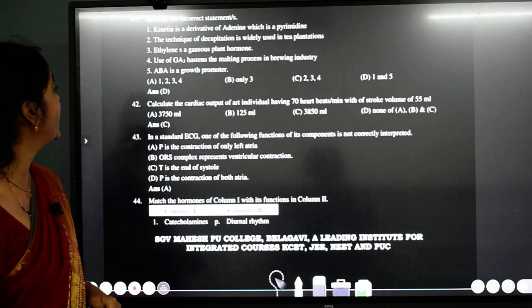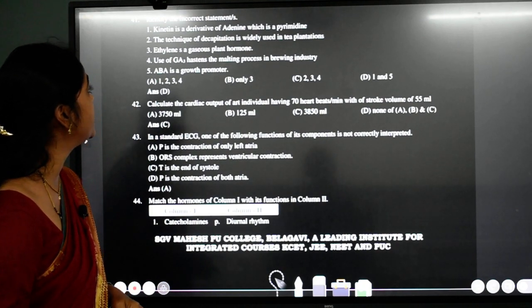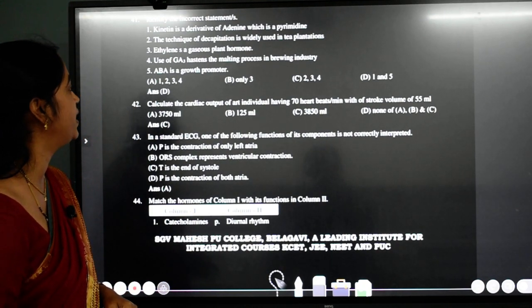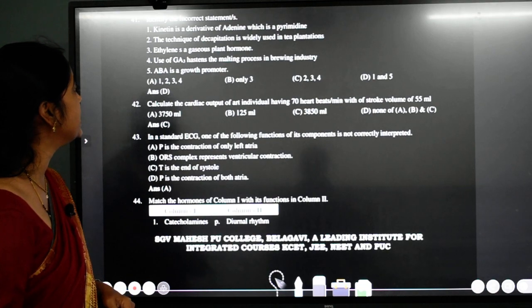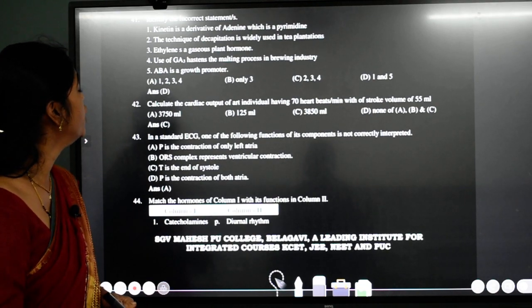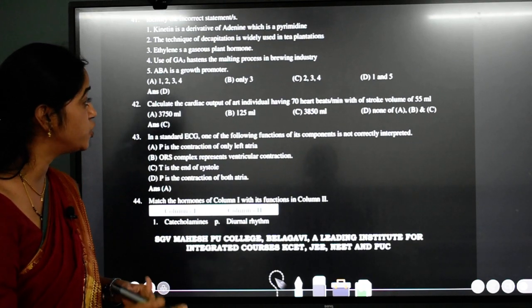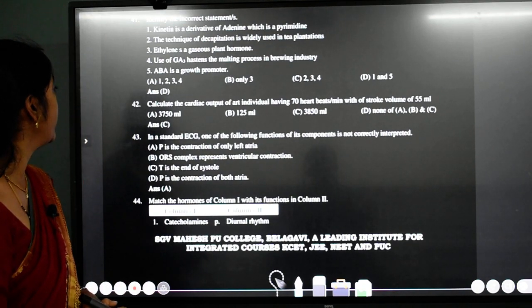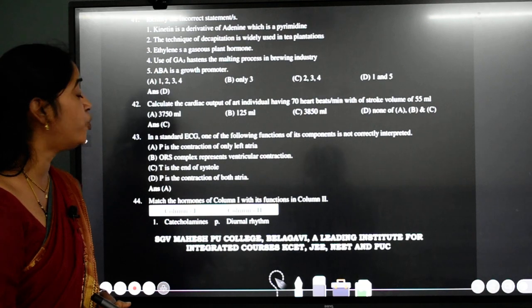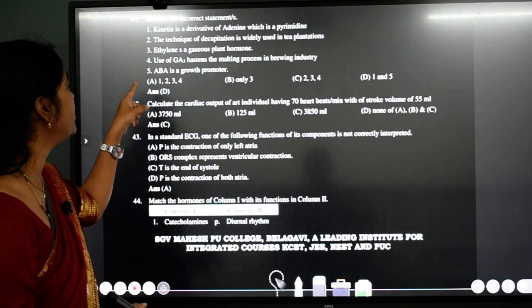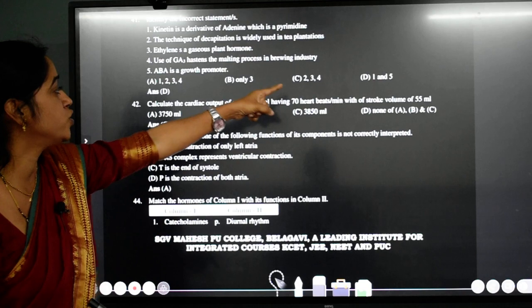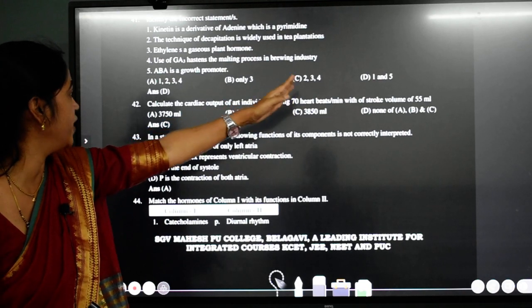Second one, the technique of decapitation is widely used in the tea plantation. Correct. Ethylene is a gaseous plant hormone. Correct. Use of GA3 hastens the malting process in brewing industry. That is also correct. Fifth one, ABA is a growth promoter. No, it is not a growth promoter. So if you see in five statements, 1 and 5 are wrong. So the answer is D, 1 and 5.